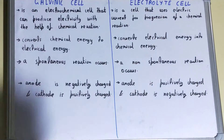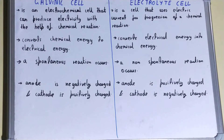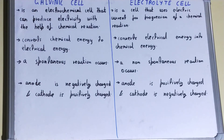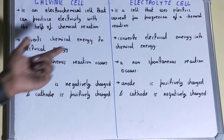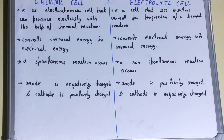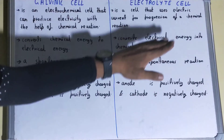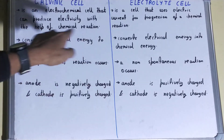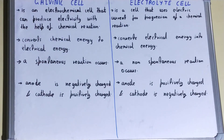Next, the galvanic cell converts chemical energy into electrical energy — the energy obtained from the chemical reaction is converted into electrical energy. But the electrolytic cell does the opposite: it converts electrical energy into chemical energy.